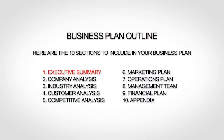The first section is your executive summary, which is essentially the introduction to your business plan. The next section is your company analysis, which gives a little more background. Next up is your industry analysis, where you talk about your market and trends. The fourth section is your customer analysis, where you go more in depth about your target market. The fifth section is your competitive analysis, where you provide an analysis of your competition, including what differentiates you from your competitors.